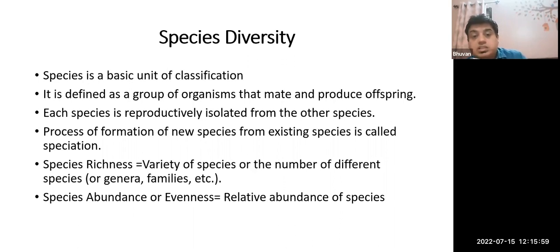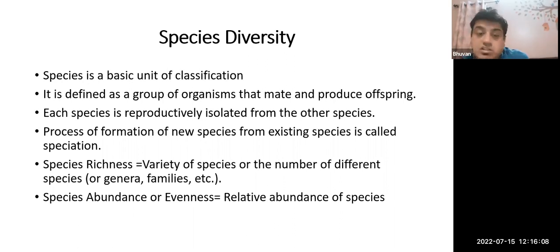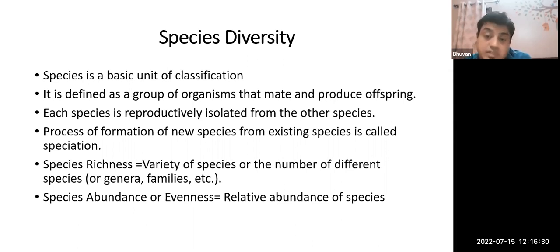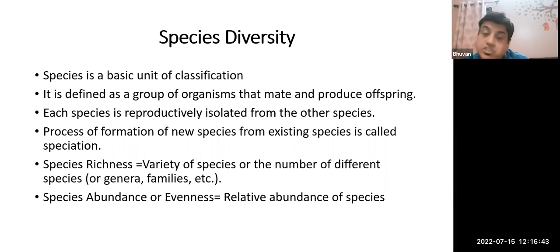Two important terminologies: species richness indicates the variety — the number of different kinds of species present within an ecosystem, including genera and families. Species abundance or evenness gives an account of the relative abundance of species — which species are more abundant compared to others. Evenness gives us the concept of how evenly a species is distributed within the ecosystem.